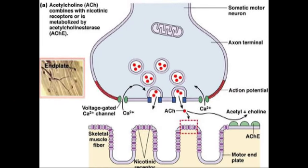Looking at the diagram, the action potential is generated down the nerve, which then stimulates the voltage-gated calcium channels on the presynaptic terminal. This stimulates the release of acetylcholine, which crosses the neuromuscular junction, binds to nicotinic receptors, and depolarizes and activates the muscles. One important point: most neurotransmitters are inactivated by reuptake, taken back into the presynaptic terminal. Acetylcholine is predominantly inactivated by the enzyme acetylcholinesterase, which has important clinical applications.